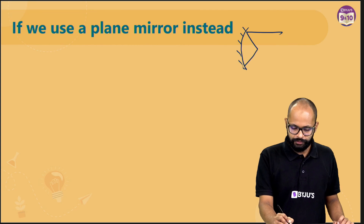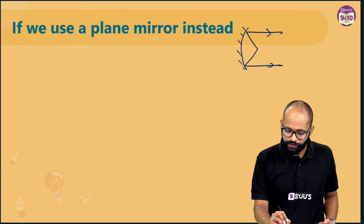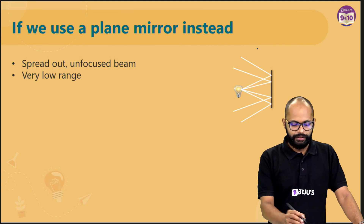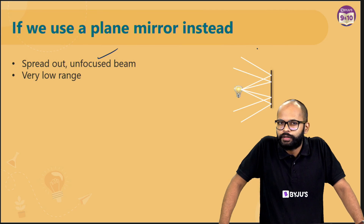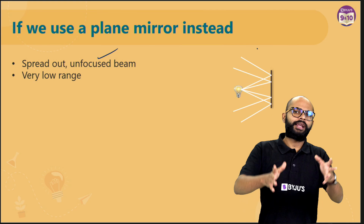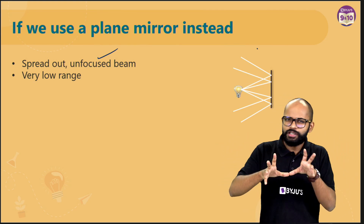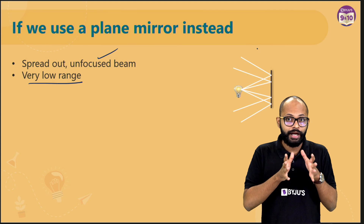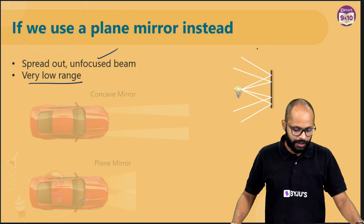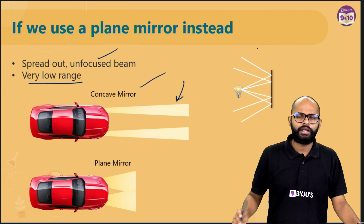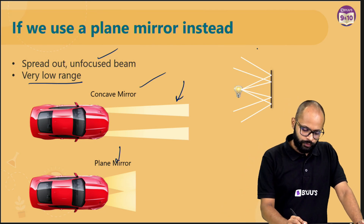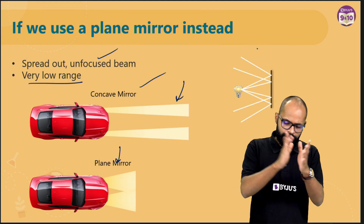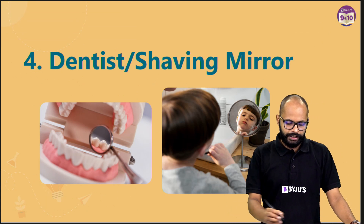With a concave mirror, the light becomes parallel and you get strong parallel rays. But what if you use a plane mirror? A spread-out, unfocused beam comes out — the light rays are not parallel, they are spread out. The illumination will not be as good and the range will be much less. The light is not able to travel as far because it is not collimated into a parallel beam. A concave mirror gives a focused beam; a plane mirror gives a spread-out beam.